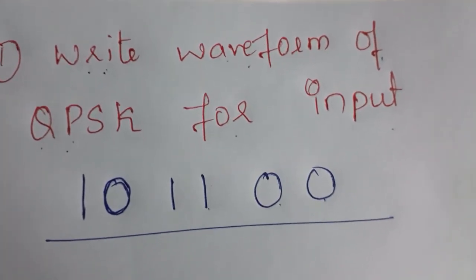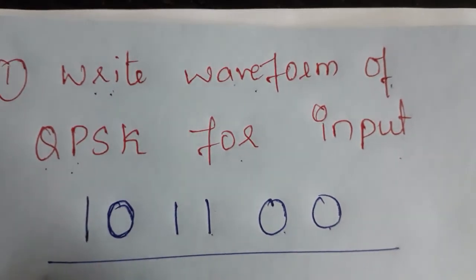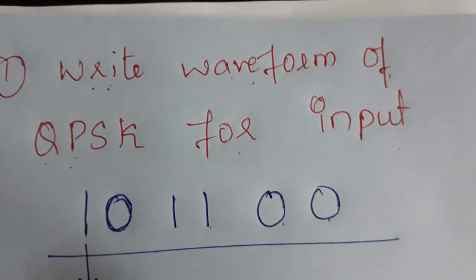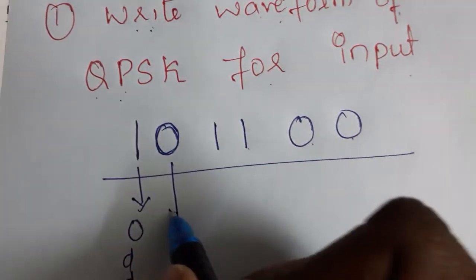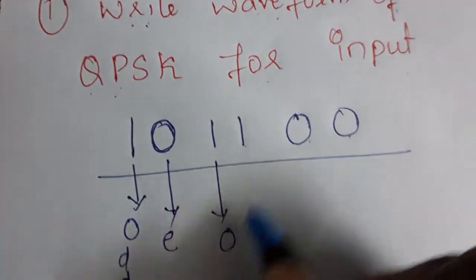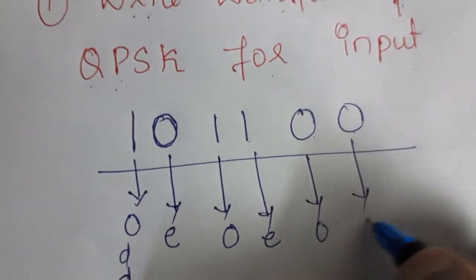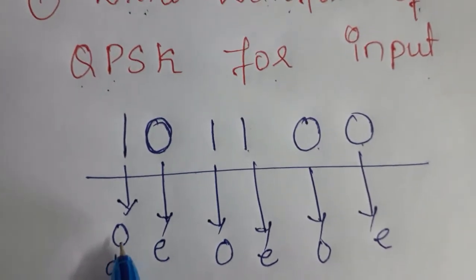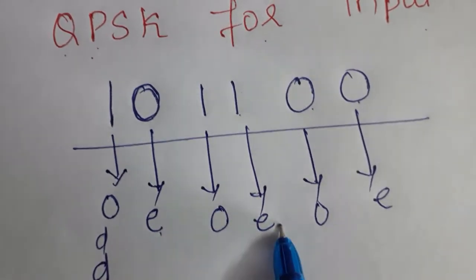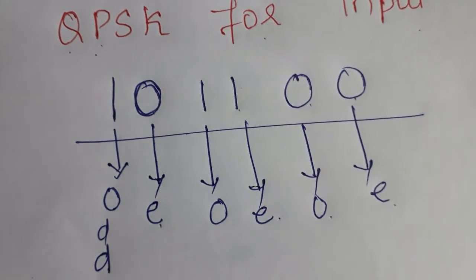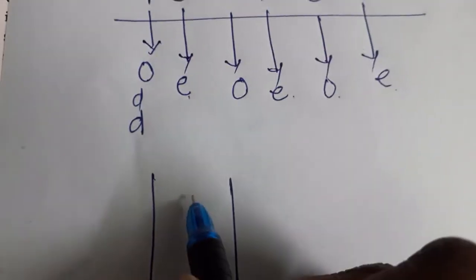To do that, let us first go for the data. I am calling the first data as odd and the second data as even — then odd, then even, then odd, then even. This is how I have divided the data: odd, even, odd, even, odd, even.